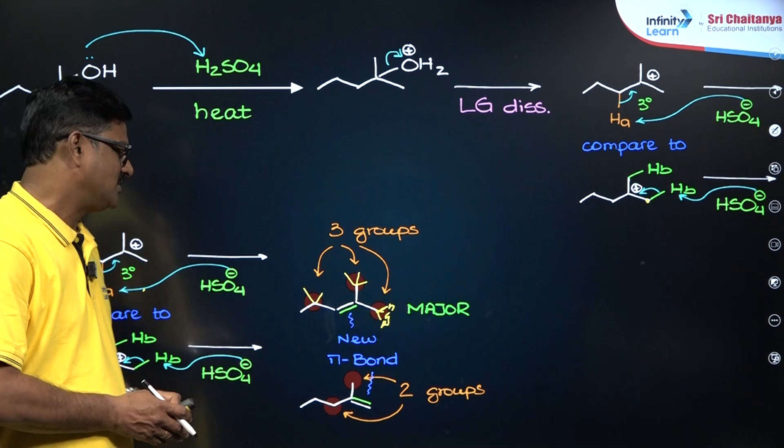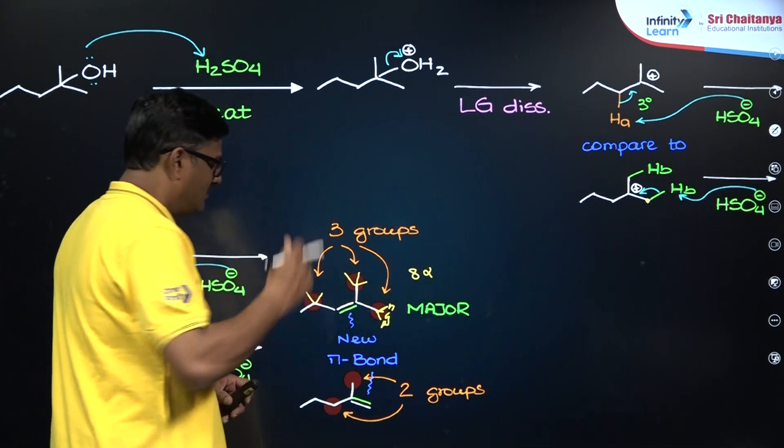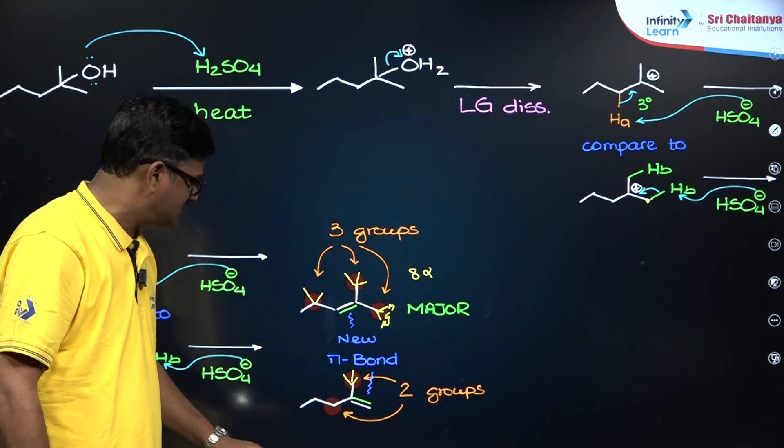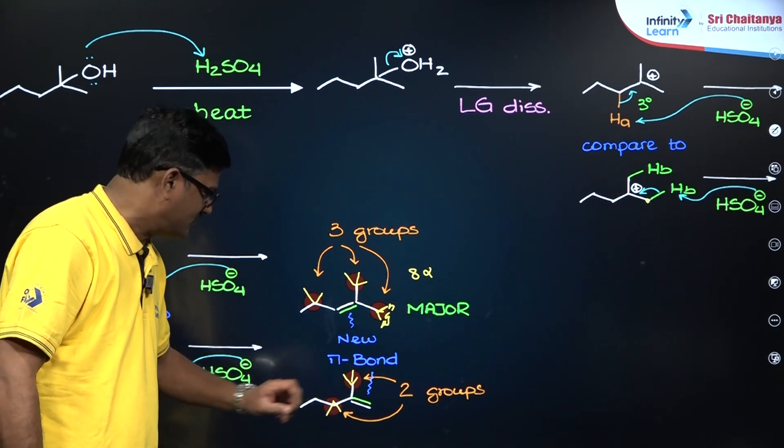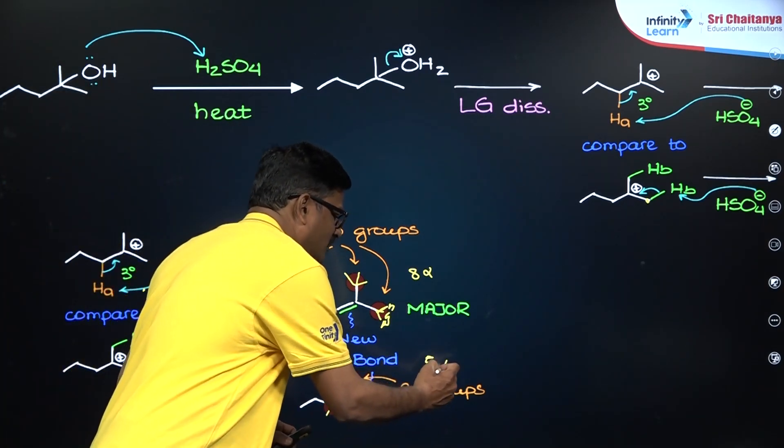Here is a methyl group, so three alpha hydrogens, and here three alpha hydrogens, and you have two alpha hydrogens - total I could see eight alpha hydrogens. When you talk about this, I could see three alpha hydrogens, I could see two alpha hydrogens - I could find only five alpha hydrogens.